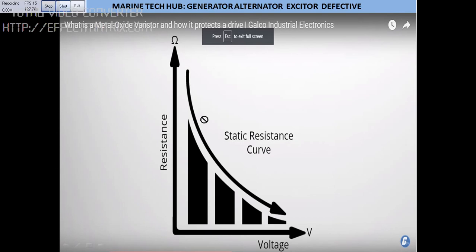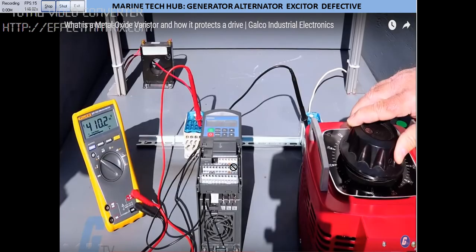For the MOV we get a graph of resistance versus voltage. When the voltage is very high, the resistance will be low, and when the voltage is low, the resistance will be high. This gives us the static resistance curve.